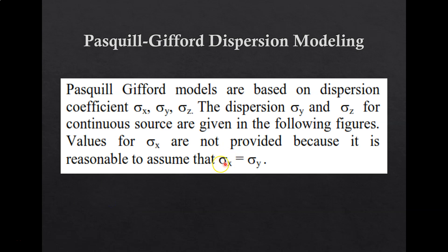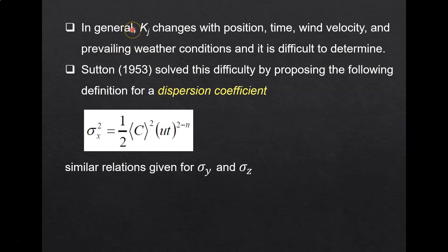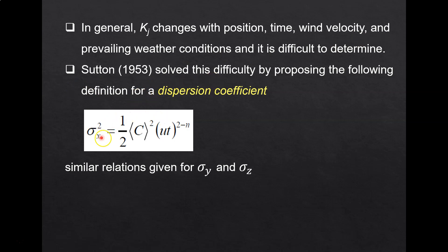You only need the information of sigma x or sigma y and also sigma z. In general, we have an advective diffusibility for cases one until ten, so this advective diffusibility coefficient changes with position, time, wind velocity, and also weather conditions. However, these parameters are very difficult to determine. To solve this problem, in 1933 this was already solved by proposing dispersion coefficients sigma x — this equation is also similar to sigma y and sigma z — where it correlates the dispersion coefficient with concentration, wind speed, and also time.